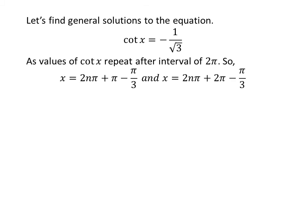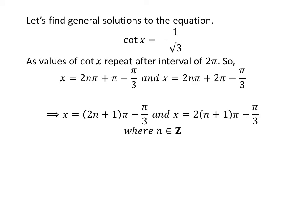Let us find the general solution. The values of cotangent of x repeat after the interval of 2 times pi. So the general solutions are 2 times n times pi plus pi minus pi upon 3, and 2 times n times pi plus 2 times pi minus pi upon 3, where n is an integer. Simplification gives the general solutions as 2 times n plus 1 times pi minus pi upon 3.